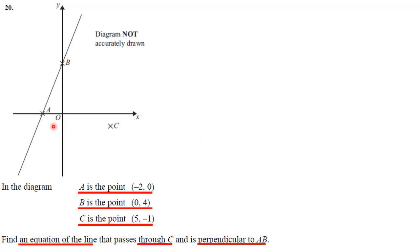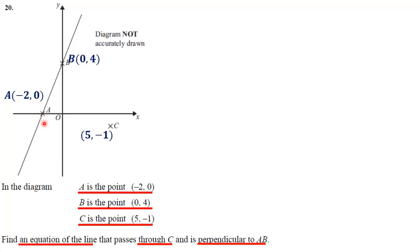I know that point A is (-2, 0), so I'm going to put that on the diagram. I know point B is (0, 4), so I'm going to put that there. And I know point C is (5, -1), so I'm just going to label it over there. So what I've just done is gone around the diagram and labeled up these points. Point A at minus two on the x-axis, and point B at positive four on the y-axis.